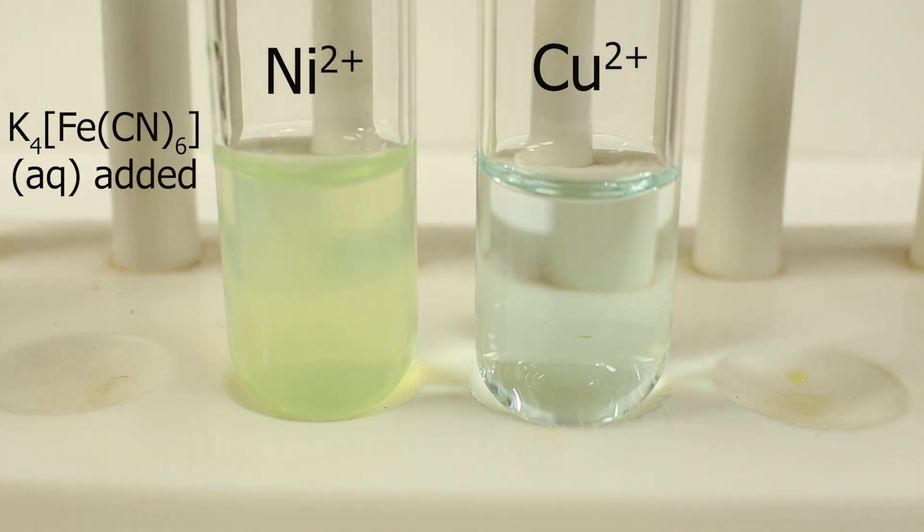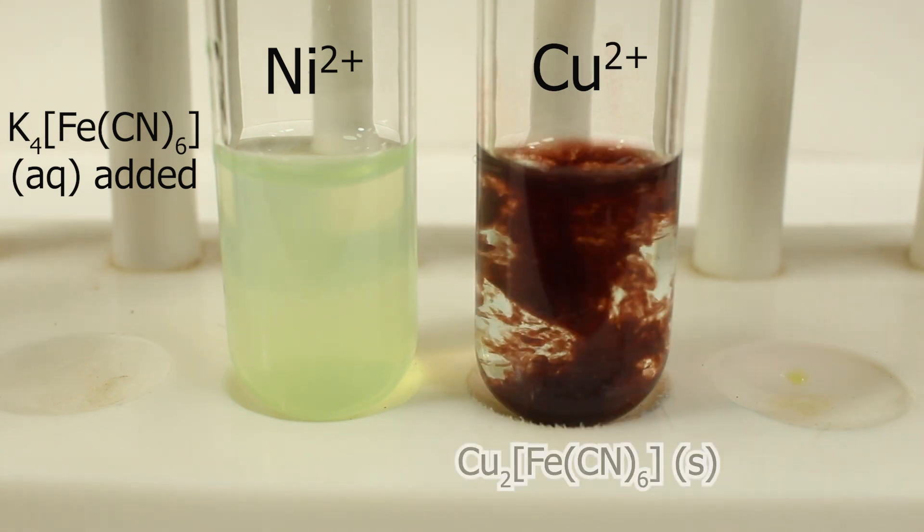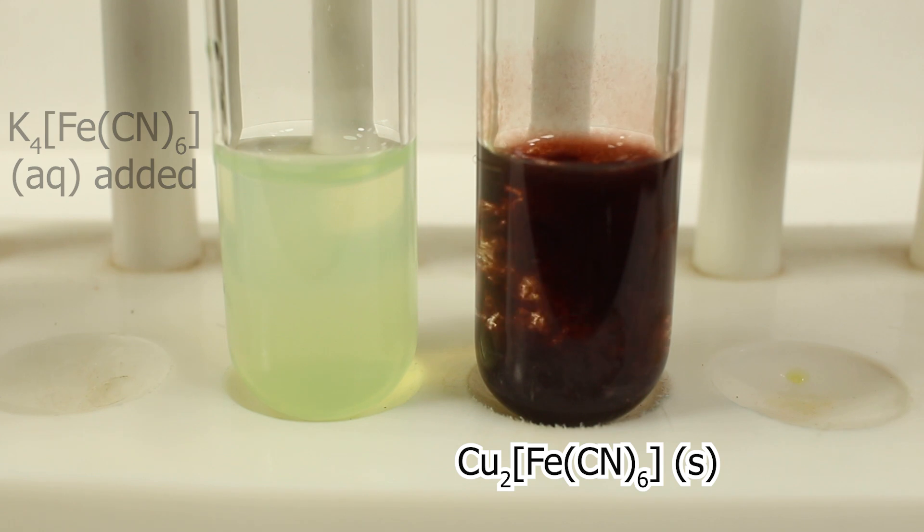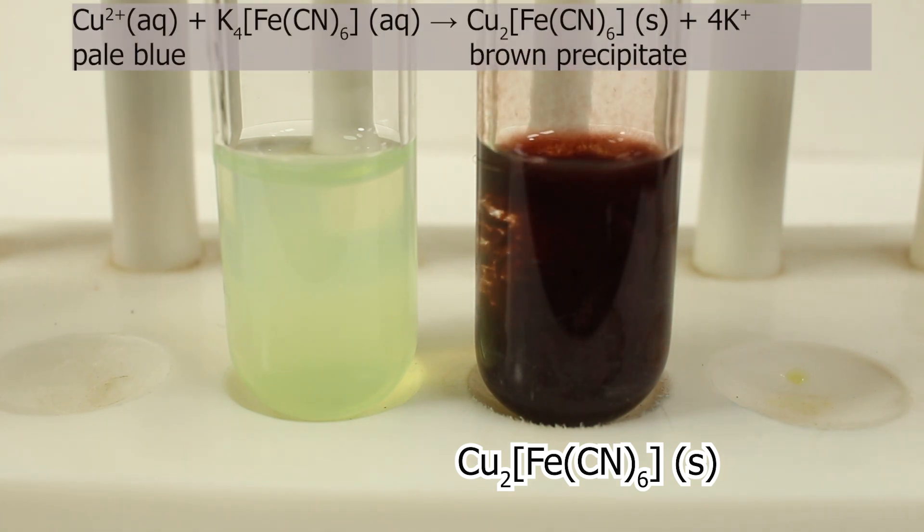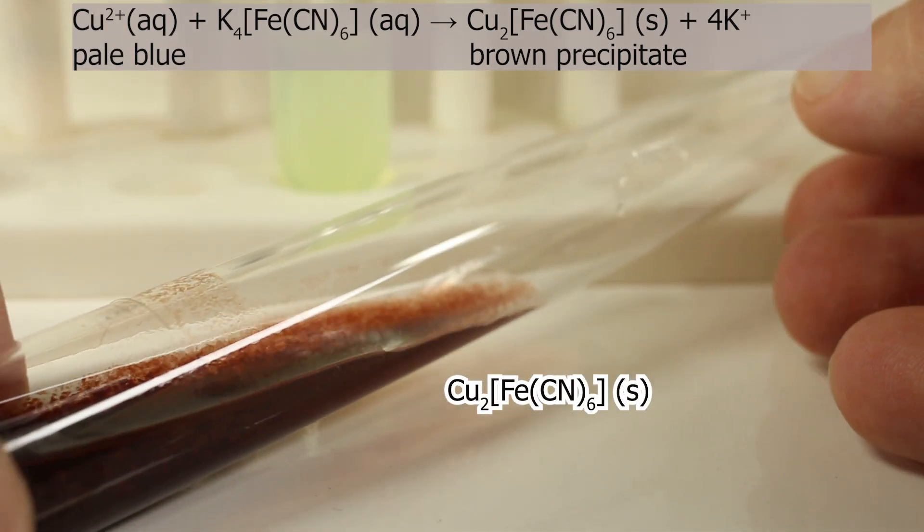In case of copper II let's see what happens. Formation of chocolate brown precipitate. Positive result for copper ions on addition of potassium ferrocyanide. It's copper II ferrocyanide precipitate, chocolate brown.